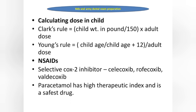Selective COX-2 inhibitors have minimum or no role in causing gastritis or gastric ulcer. So in a patient with peptic ulcer, we use selective COX-2 inhibitors. Examples are celecoxib, rofecoxib, and valdecoxib. Paracetamol has a high therapeutic index and is the safest drug.